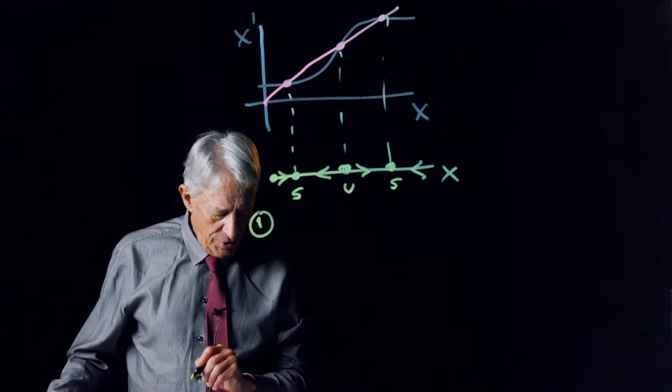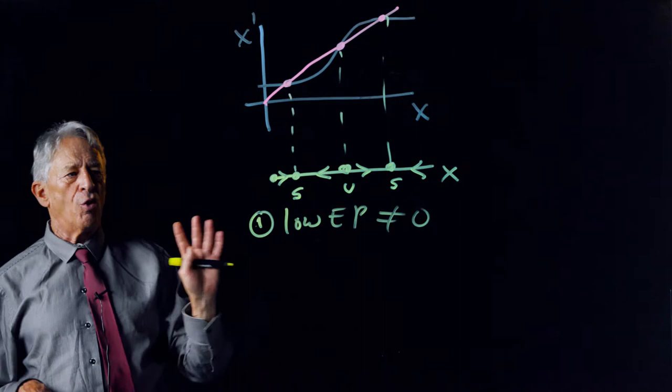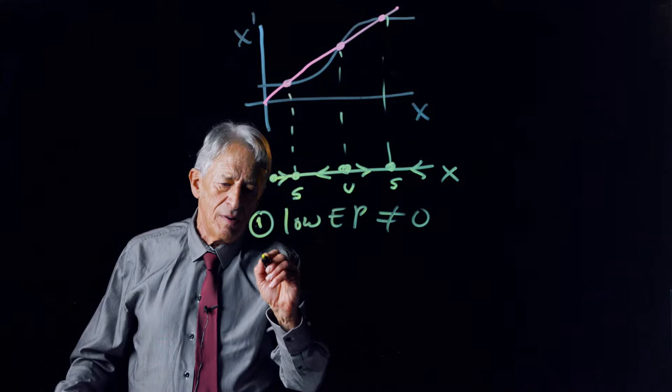Number one, the low equilibrium point, this stable one here, is not zero. We mentioned that. So, there's always a little bit on hand, even when there's no lactose present. That's good, because we need to keep a little on hand.